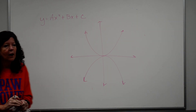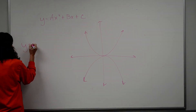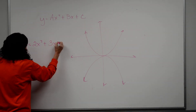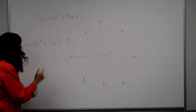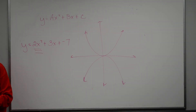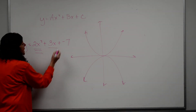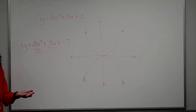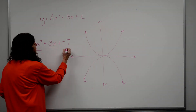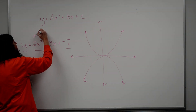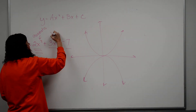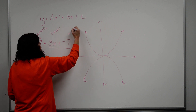A, B, and C are going to be numbers. So I might have something like 2x squared plus 3x plus negative 7 — that's what I would call a quadratic equation. There are different terms in this equation. This is considered the quadratic term because your x is squared. This right here is your linear term — when you think of y equals mx plus b, the x is not squared. And this is what we call a constant term.